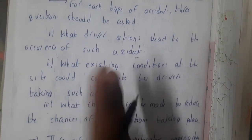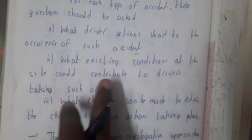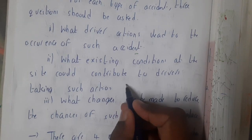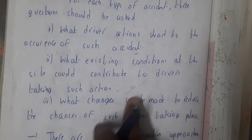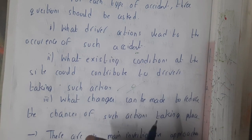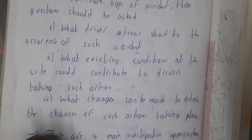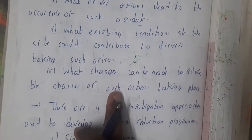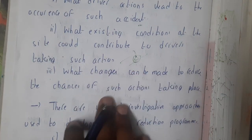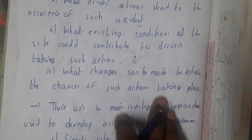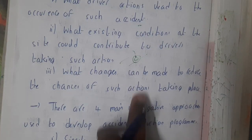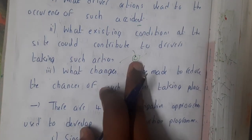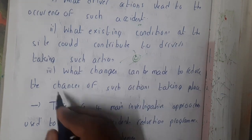The second question is: what existing condition at the site could contribute to the driver taking such an action? For example, if the road is not proper and there is a pothole, the driver may suddenly turn and hit a pole. The third question is: what changes can be made to reduce the chance of such an action taking place? If you close that pothole through road maintenance, there will be no further issues.